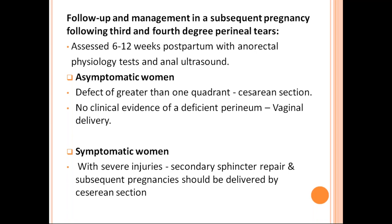Follow-up should be at 6 to 12 weeks postpartum with anorectal physiology tests and anal ultrasound. Asymptomatic women with sphincter defects greater than one quadrant should be advised caesarean section. With no clinical evidence of deficient perineum, vaginal delivery can be allowed. Symptomatic women with severe injuries require secondary sphincter repair, and subsequent pregnancies should be delivered by caesarean section.